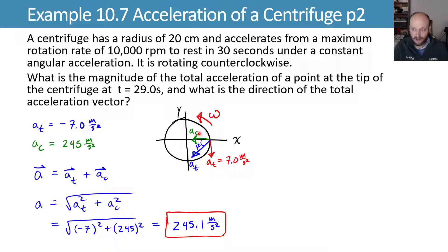So the inverse tangent of 7 over 245 gives us 1.6 degrees. This means that my overall magnitude is 245.1 meters per second squared at an angle that's 1.6 degrees off the radius lagging behind it.